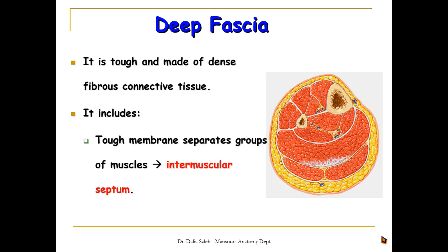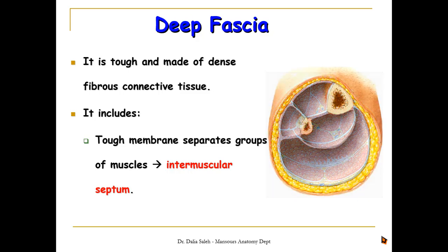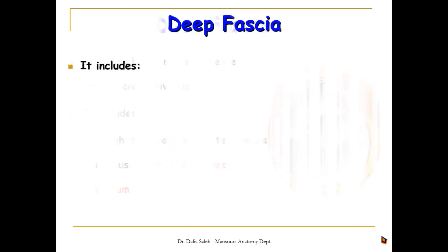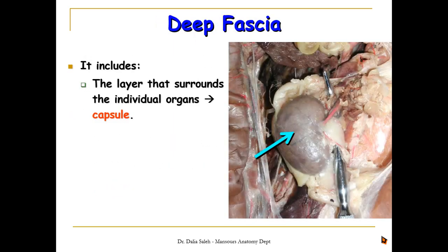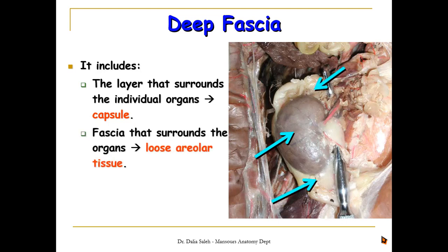If we look at this diagram and remove the muscles, you can notice the intermuscular septum. We also have a layer of deep fascia that surrounds individual organs — we call it the fibrous capsule. Here we can see the renal capsule, or fibrous capsule, around the kidney. We may also see a layer of deep fascia in the form of loose areolar tissue around the organs.